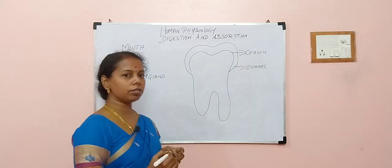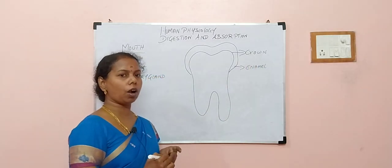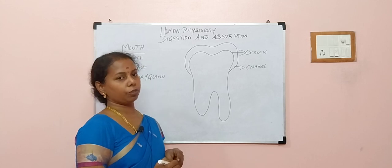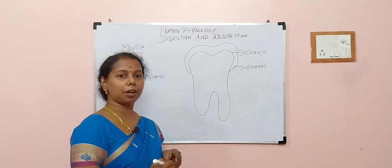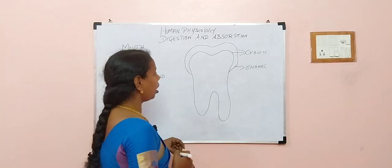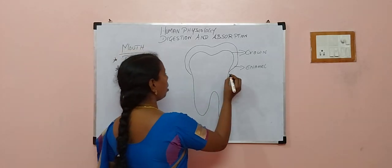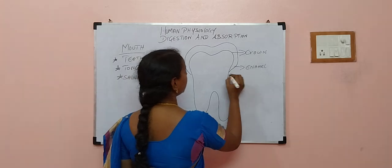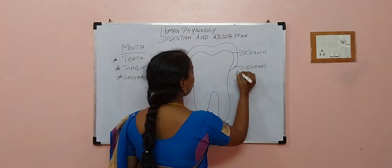Can you tell me the answer, children? Why enamel is harder than even bones? Of course, again post your answers in the comment box. I will discuss the answer anyway in the next video. So enamel is there and enamel is synthesized by a cell called ameloblast.